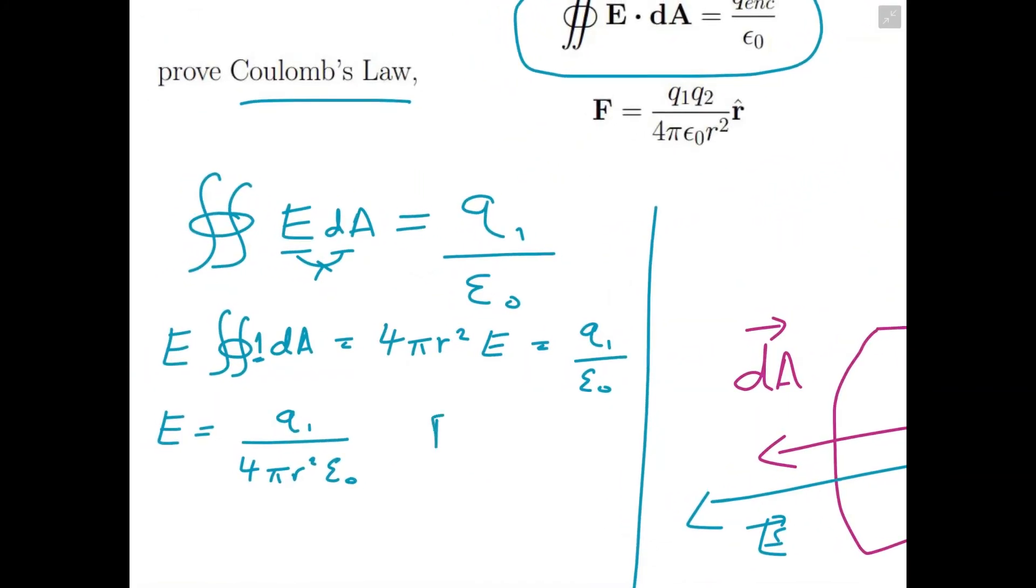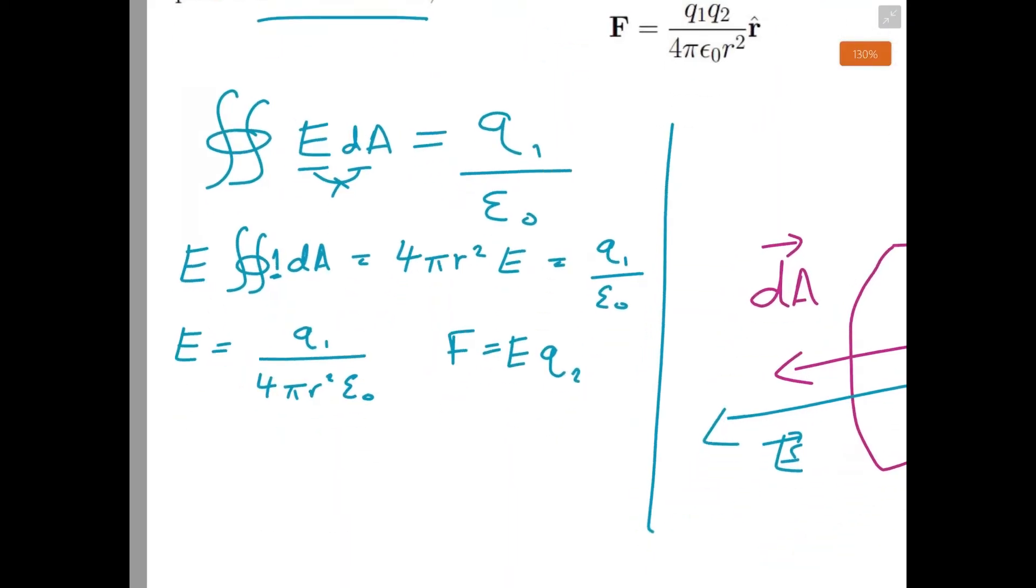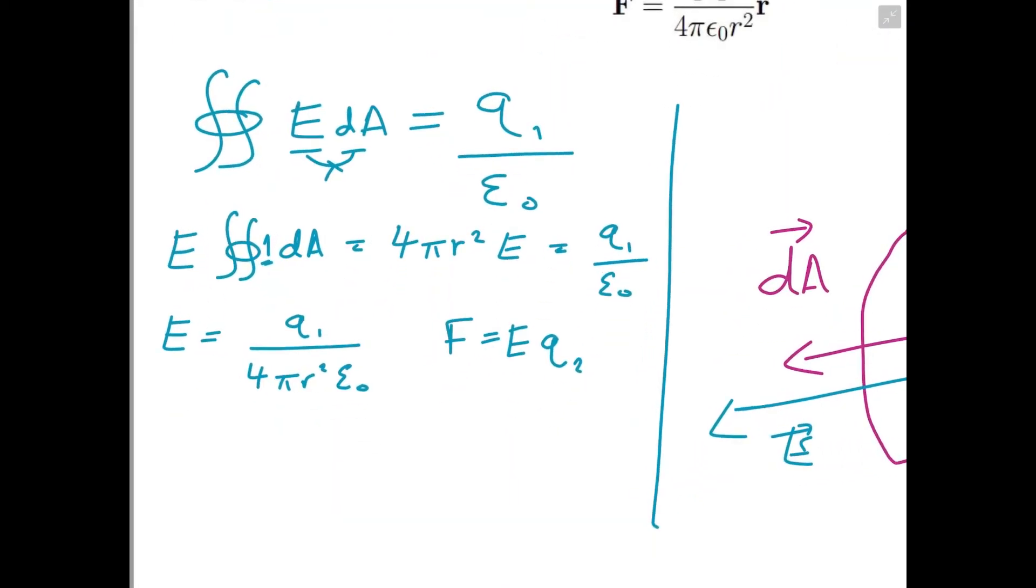So now we can find F using the formula F equals the electric field strength times our test charge, which we will call q₂. So we get F is equal to E, so that's q₁ over 4πr²ε₀ times q₂.